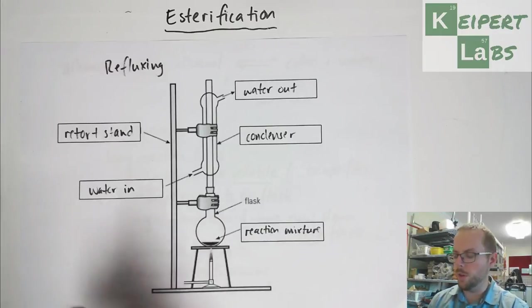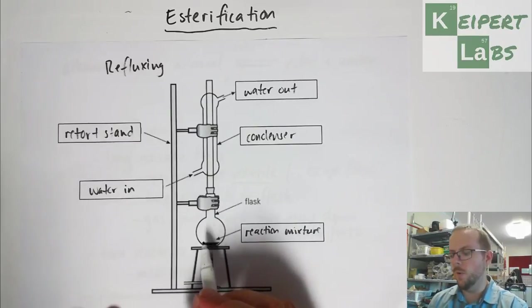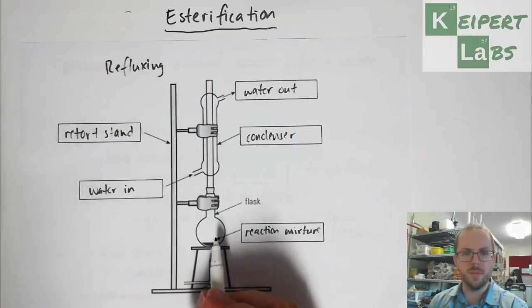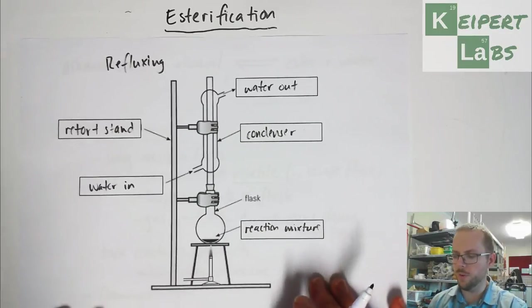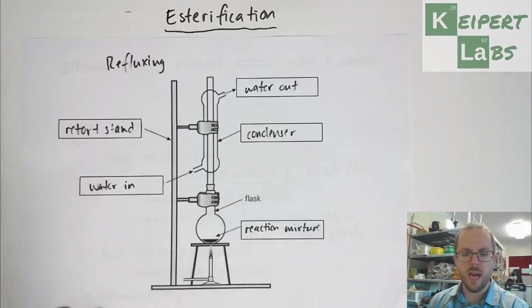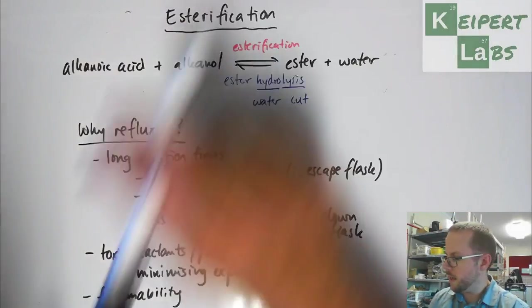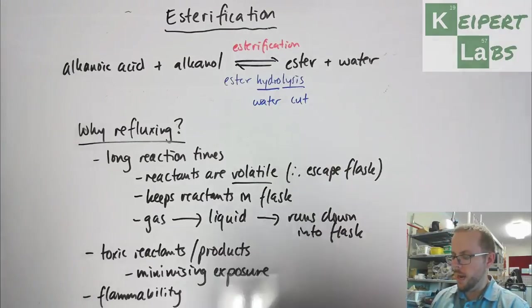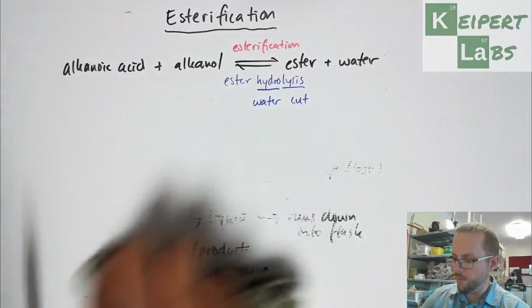And so if we want to isolate our ester, we have to try and do a separation at the other end. Or if we're just looking for a qualitative measure that we have produced it, like we just want to smell the characteristic odour or something like that, then we can make observations from the flask directly. Now, also, what we do is that thinking about our refluxing.